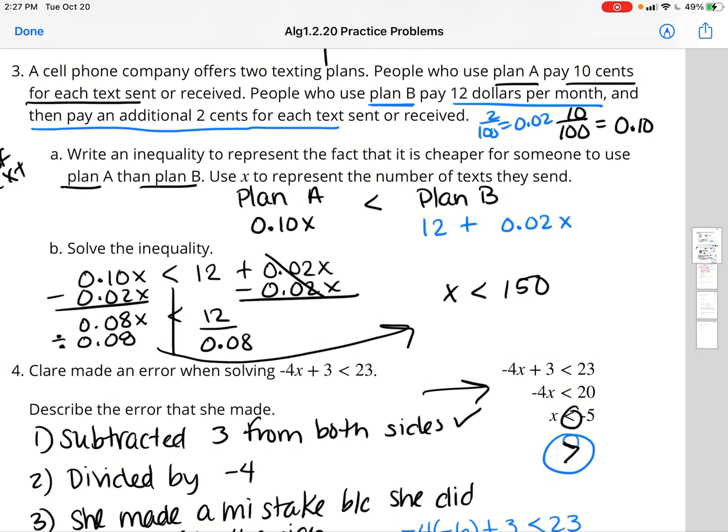We're coming up with an inequality for letter A. We know that plan A, we want to say that plan A is cheaper than plan B. And we're going to use the letter x to represent the number of texts. It says 10 cents. 10 out of 100 is 0.10, so I changed that to a decimal. So plan A is simply 0.10 times x. And then we said that it's cheaper, so that means it's less than plan B. Plan B is $12, and then pay an additional 2 cents for each text. So 2 cents times the text.